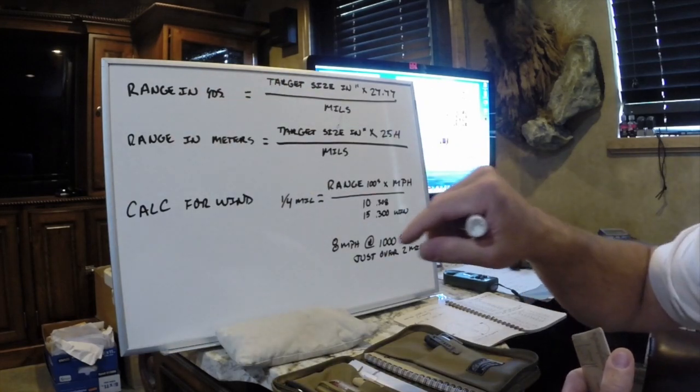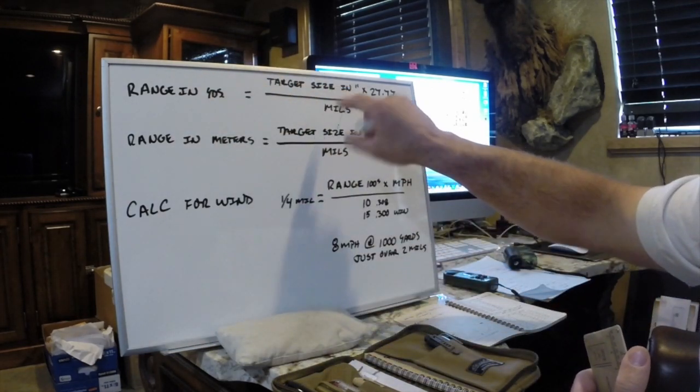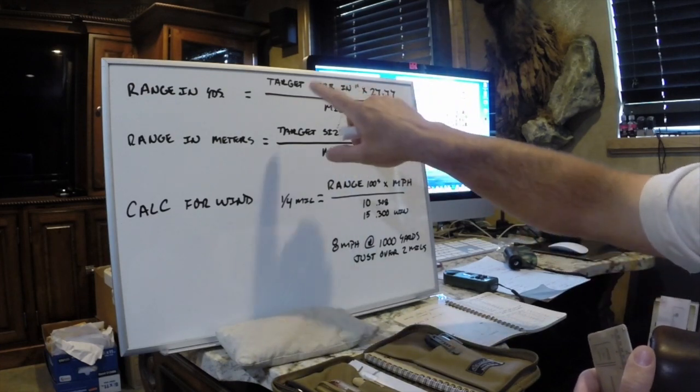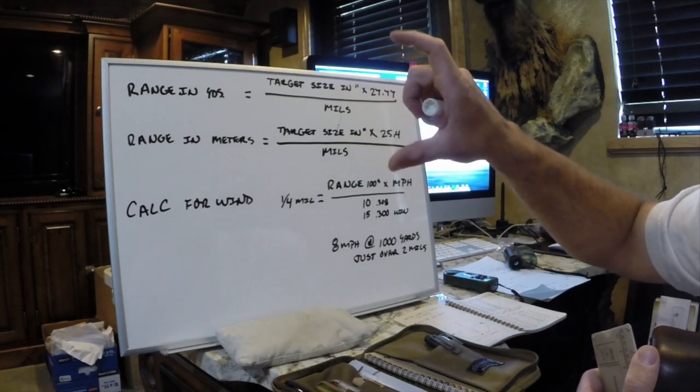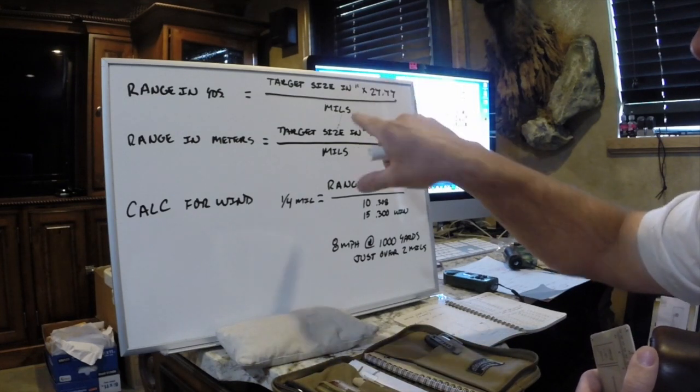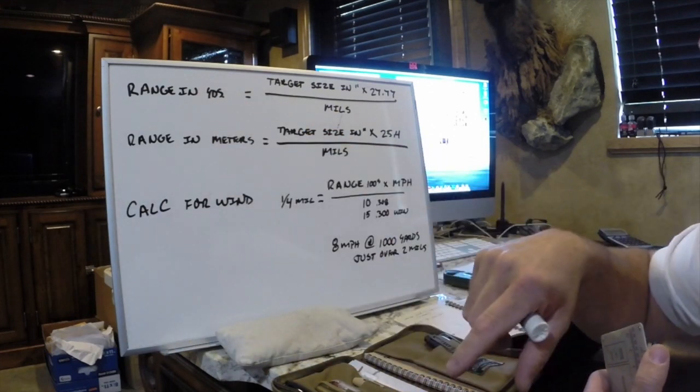So there's a couple of little quick formulas that you can use to figure out your range. If I know my target size in inches, what I do is I take that size, times it by 27.77, and then I measure it in my scope and divide it by how many mils are in my scope. And that will give me my distance.